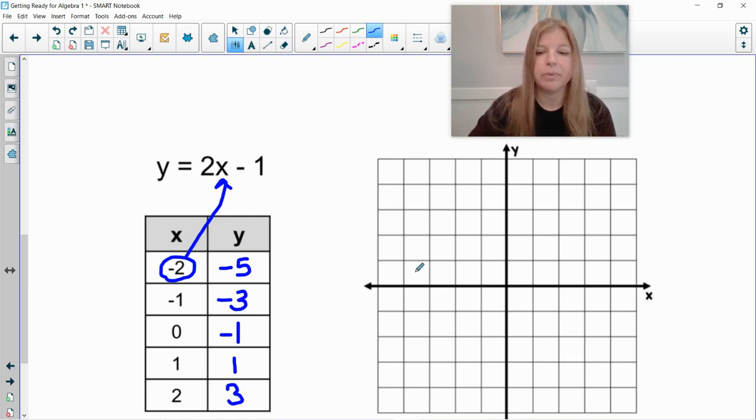I'm going to go ahead and plot my points. So negative 2, negative 5. 1, 2, 3, 4, 5. All the way at the bottom of my screen. Negative 1, negative 3. So negative 1, negative 3. 0, negative 1. So 0, negative 1. 1, 1. So positive 1, positive 1. And then positive 2, positive 3, positive 2.